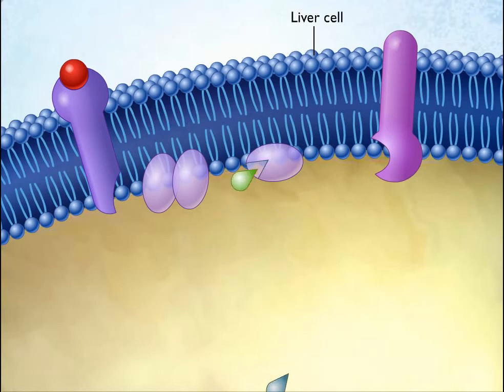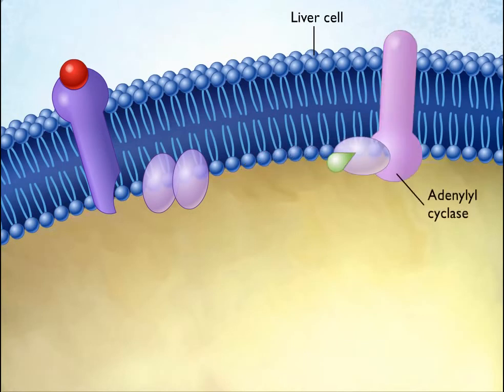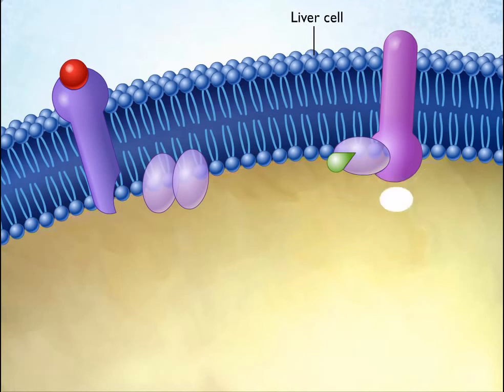The activated G protein subunit then diffuses within the plasma membrane until it encounters adenylyl cyclase, a membrane enzyme that is inactive until it interacts with the G protein subunit. When activated by the G protein subunit, adenylyl cyclase catalyzes the formation of cAMP from ATP.